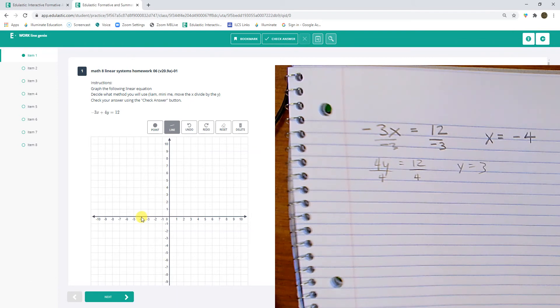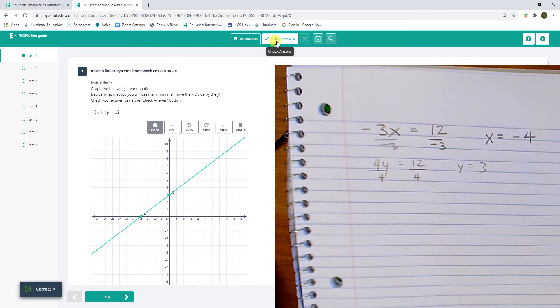And let's actually draw a line this time. Negative 4, 3. And now we'll check it again. And we're good. Cool. Next problem.